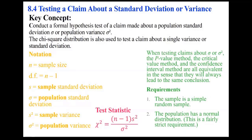The p-value method, the critical value method, and the confidence interval method are all equivalent. However, it's important to note that due to limitations of the table, using those may not be easy, but you can do it by definition.